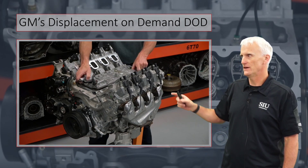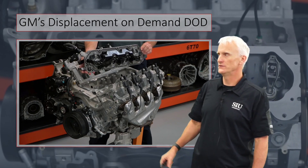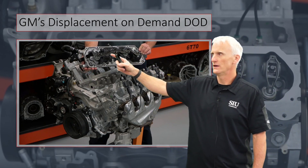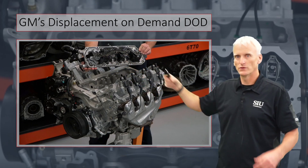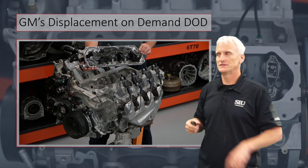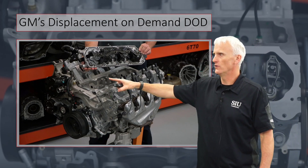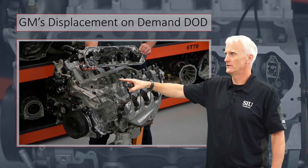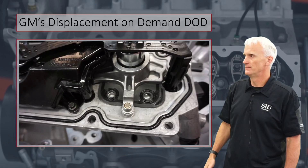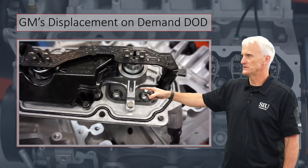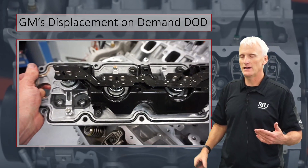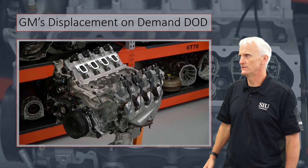This is the VLOM — the Variable Lift Oil Manifold. You can see I've got four solenoids here, and those four solenoids control the four cylinders that can be deactivated: cylinders 1, 4, 6, and 7. You can see the little oil pressure holes that go down to the valley where the lifters exist — that's cylinder 1 right there. Those are the passageways that when that solenoid activates, the oil pressure goes in there and finds its way to that lifter.